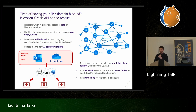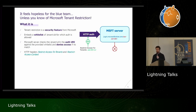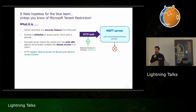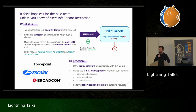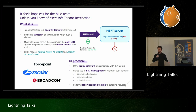The infected hosts communicated with the malicious tenant through the Graph API, and it was impossible to block. So we discovered Microsoft Tenant Restriction — a security feature that allows you to prevent people in your company from authenticating on tenants you don't trust. When you perform HTTP authentication on a tenant, you add specific HTTP headers containing a whitelist of trusted tenants. The Microsoft server performs the verification. In practice, it's embedded in proxy software like Zscaler, Forcepoint, and Broadcom. You perform SSL interception on outgoing requests to Microsoft websites and inject the HTTP header for trusted tenants.